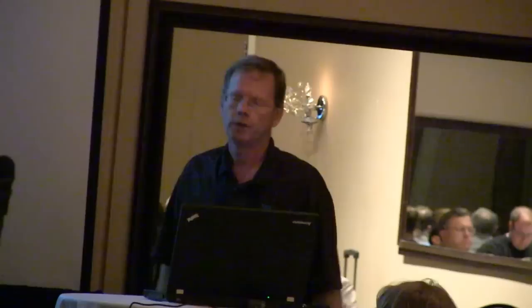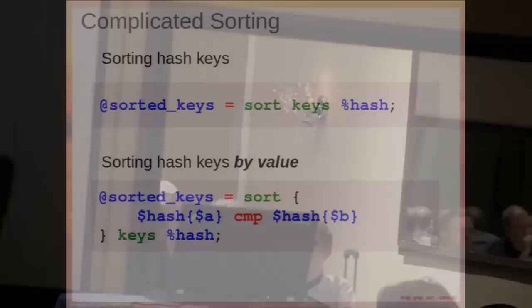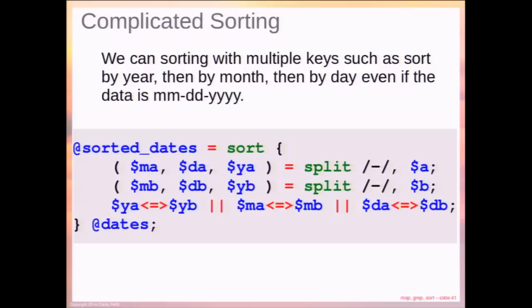If you want to sort the keys of a hash, you can do it straightforwardly. If you want to sort a hash by value instead of by keys, you can get to that value through a and b. Here's an example of sorting strings that are dates: split the dates into month, day, and year for both a and b versions, then compare the years. Using chained ors means that if the years are equal — returning zero — Perl continues to the next comparison, comparing months, and so on. You can chain these ors as much as you want.